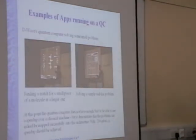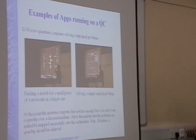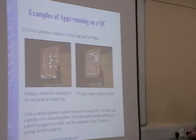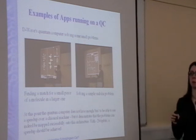Examples from D-Wave — currently the only working quantum computer with enough qubits to run real problems — are shown. One example is a molecular matching problem: finding a molecular fragment within a larger database. Another maps Sudoku onto an energy minimisation problem, where the correct solution corresponds to the minimum energy configuration across the entire problem space. However, the current machine does not yet have enough qubits to demonstrate a speed-up; problems must be split into smaller sub-problems.